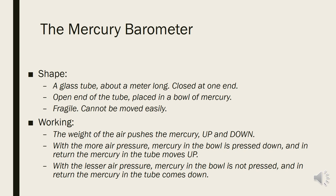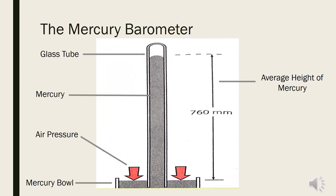The weight of the air pushes the mercury in the tube up and down. With more air pressure, mercury in the bowl is pressed down and in return the mercury in the tube moves up. When the air pressure falls, mercury in the bowl is not pressed and in return the mercury in the tube comes down. The average height of mercury in the tube is 760 millimeters. This is the picture of a mercury barometer. It shows the glass tube, mercury, and the mercury bowl. The red downward arrows show the air pressure.